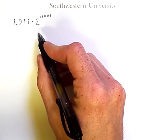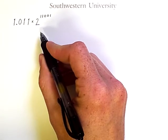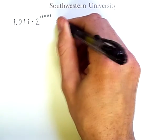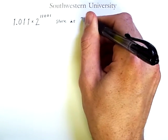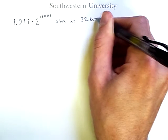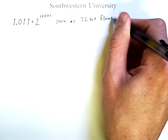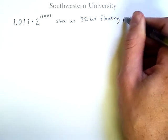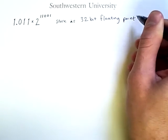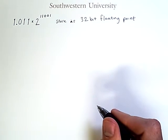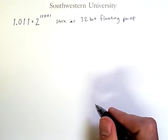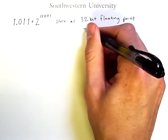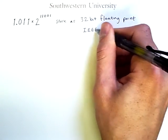In this video, we'll see how a binary number written in scientific notation would be stored in a computer using 32 bits in a format we call floating point. There are several different floating point specifications for different numbers of bits, but they all adhere more or less to a standard developed by the IEEE organization.